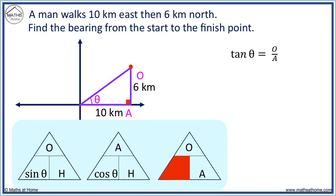If tan θ equals O over A, then θ equals inverse tan of O over A. Here O equals 6 and A equals 10. Working this out by calculator, θ is 31 degrees.